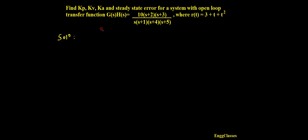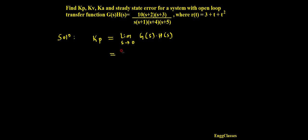The first thing I need to find is Kp, which is known as the position error constant. The formula is: Kp = limit as s tends to 0 of G(s)H(s). Let me simplify this to get the answer for Kp. Limit s tends to 0.